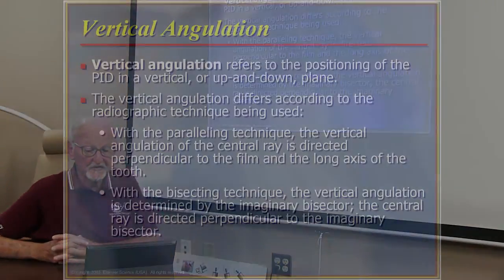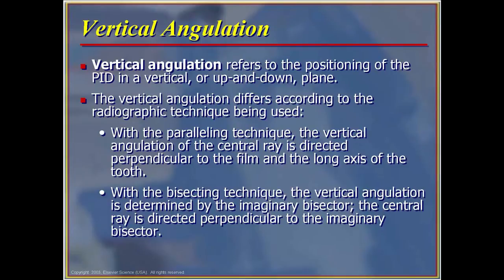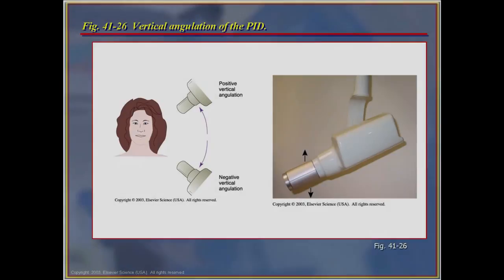Vertical angulation refers to the positioning of the PID in a vertical or up-and-down plane, and differs according to the radiographic technique being used. With the paralleling technique, the vertical angulation or central ray is directed perpendicular to the film and the long axis of the tooth. With the bisecting technique, the vertical angulation is determined by the imaginary bisector, and the central ray is directed perpendicular to the imaginary bisected angle.